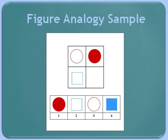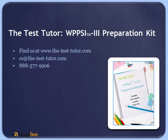Here's an example of a figure analogy. In this exercise, we see a white circle with a red outline and a solid red circle next to it. The next figure is a white square with a blue outline. Based on the relationship of the pair of circles, what should go in the empty box? The answer is number four — a solid blue square goes with the set, as both pictures are related to each other in the same way.